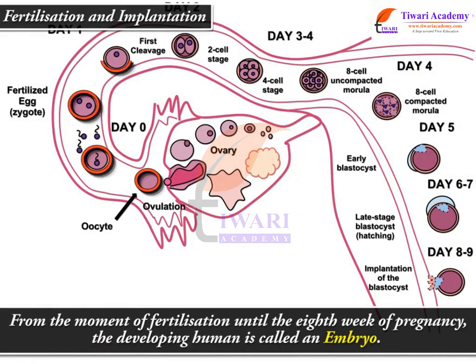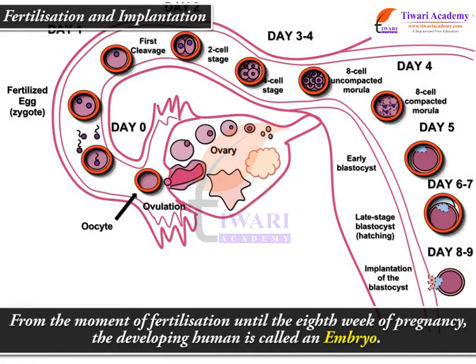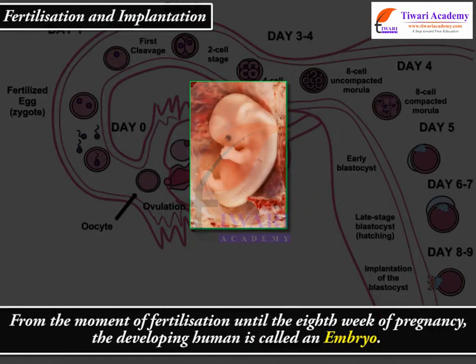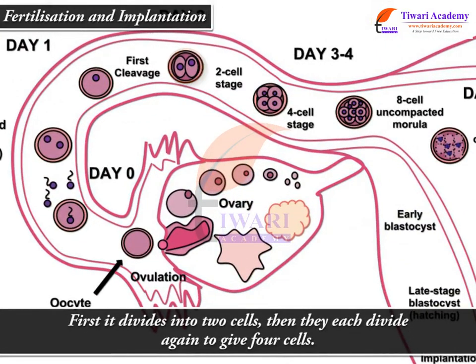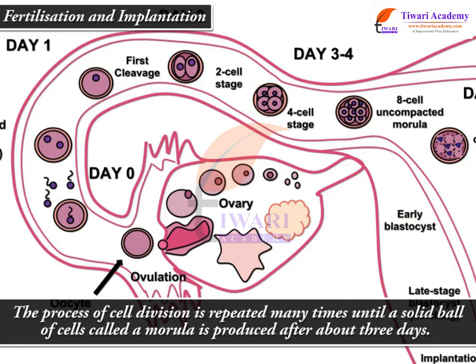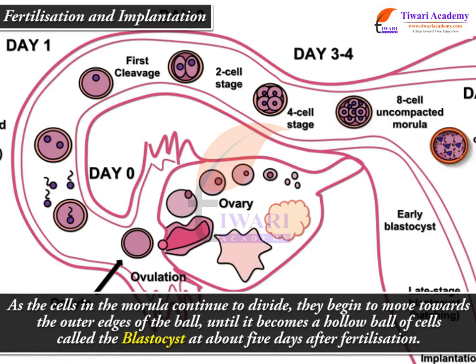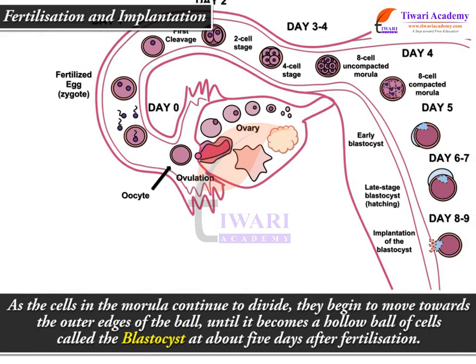From the moment of fertilization until the 8th week of pregnancy, the developing human is called an embryo. The process of cell division is repeated many times until a solid ball of cells called a morula is produced after about 3 days. As the cells in the morula continue to divide, they begin to move towards the outer edges of the ball until it becomes a hollow ball of cells called the blastocyst at about 5 days after fertilization.